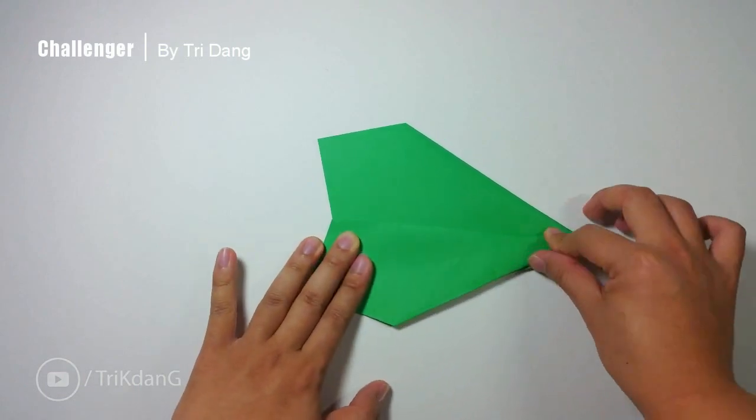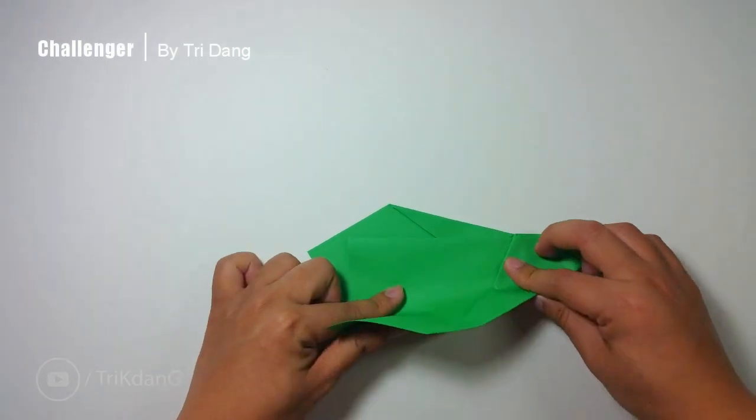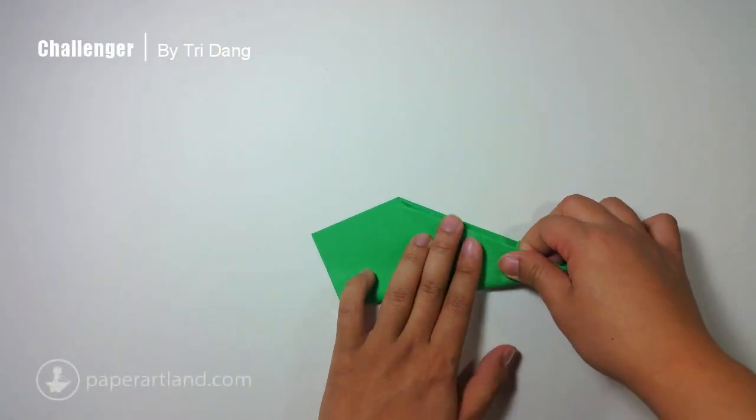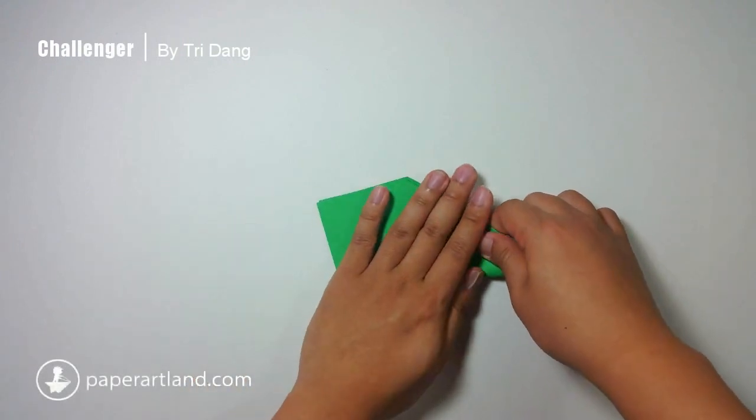And repeat the same fold for the opposite side. Turn the paper over, and fold this layer of the paper down to create the wings.